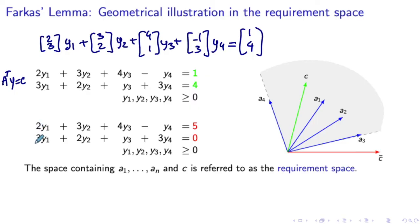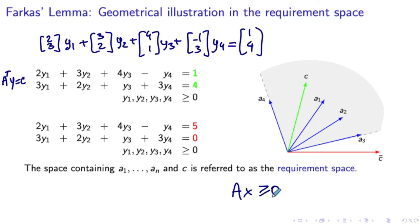Here we have another example using the same set of Ai vectors, but with a different vector C = (5,0), shown in red. In this case, vector C is outside the cone formed by the Ai's, which means the second system has no solution. By the Farkas Lemma, this implies the first system — Ax ≥ 0 and C transposed x < 0 — does have a solution. For the first system to have a solution, we need vector C to stay outside the cone formed by the vectors Ai's.